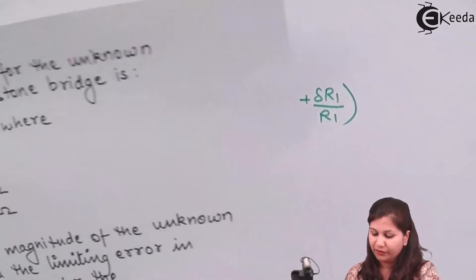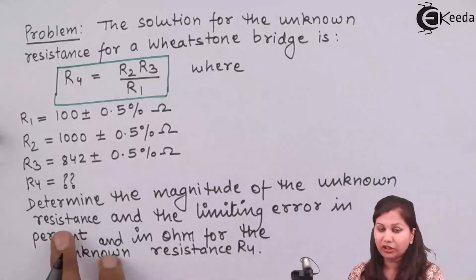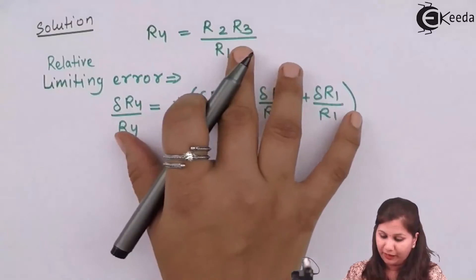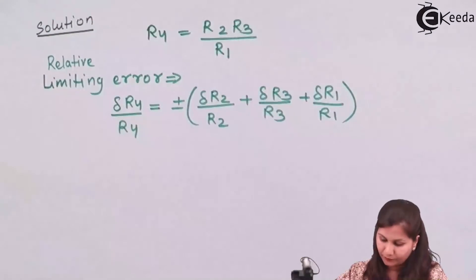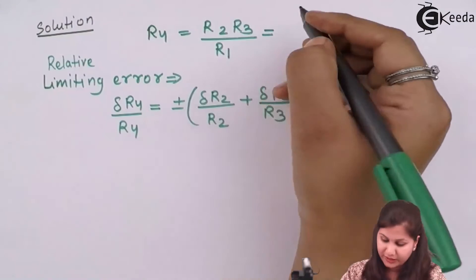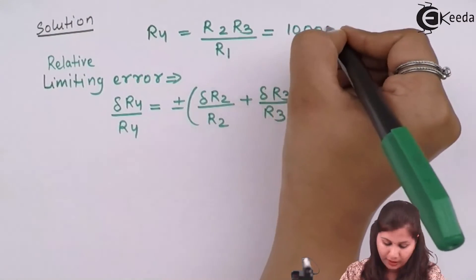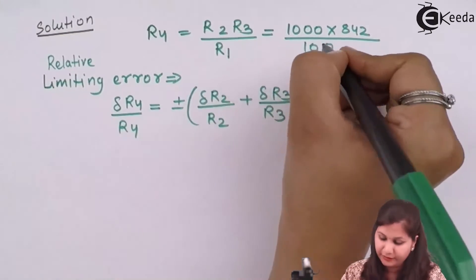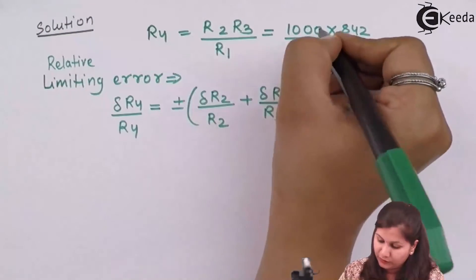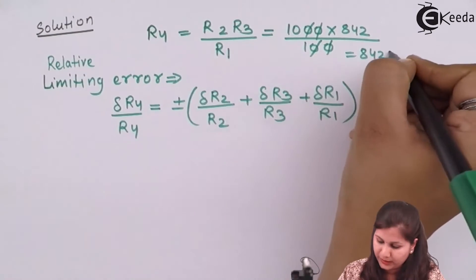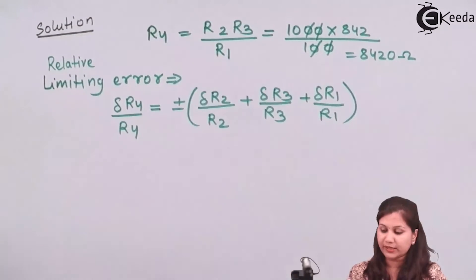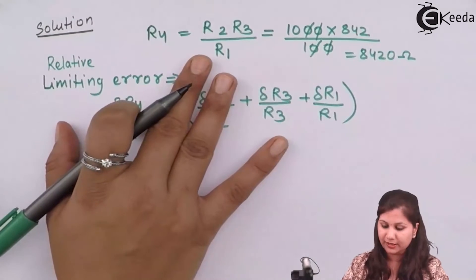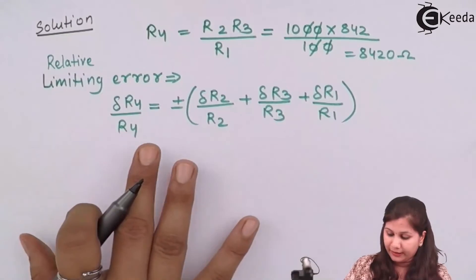First, we have to determine the magnitude of the unknown resistance. We simply put the values: R2 is 1000 ohm, R3 is 842 ohms, and R1 is 100 ohms. Solving this we get R4 = 8420 ohms. So this is the magnitude of the unknown resistance R4.